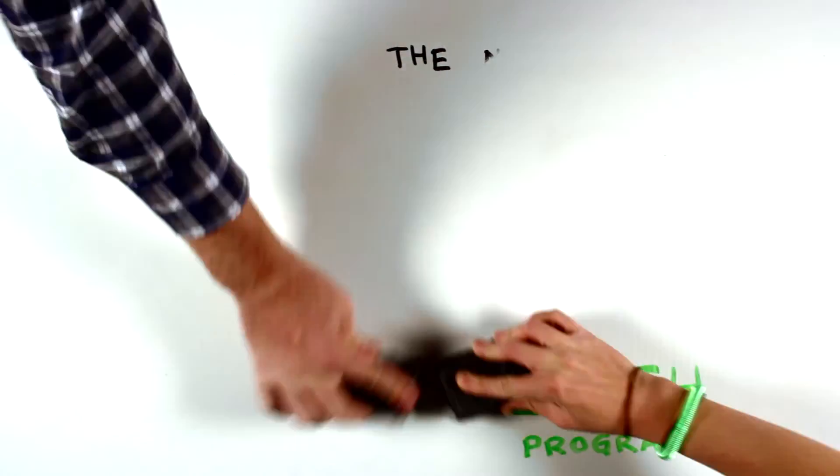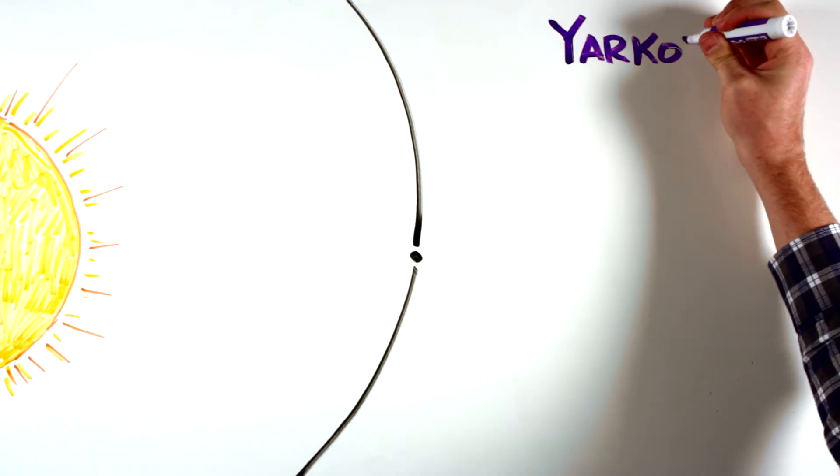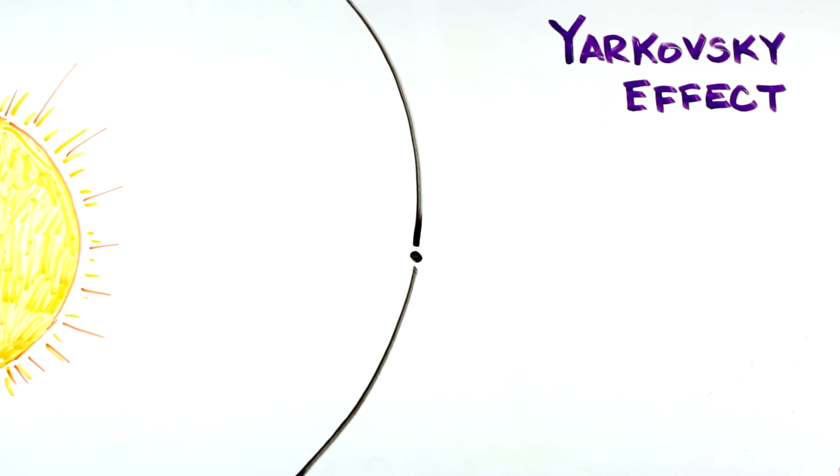The direction that an asteroid spins can determine how its orbit will change under the influence of the Yarkovsky effect. If the asteroid is spinning in the prograde sense, its orbit will expand. If the asteroid is spinning in the retrograde sense, its orbit will shrink.